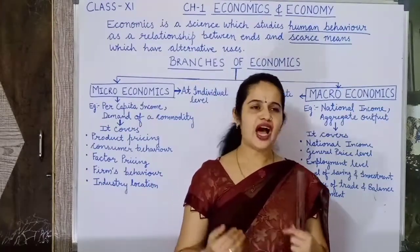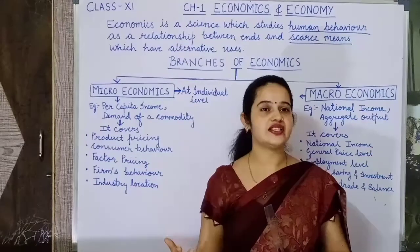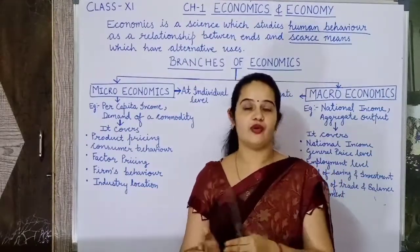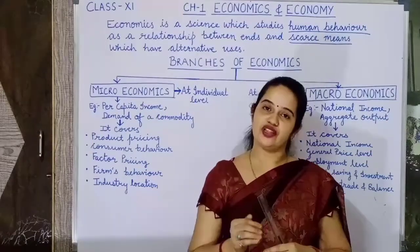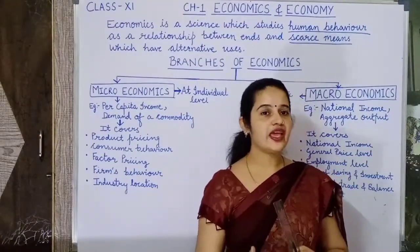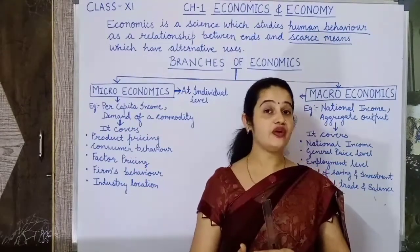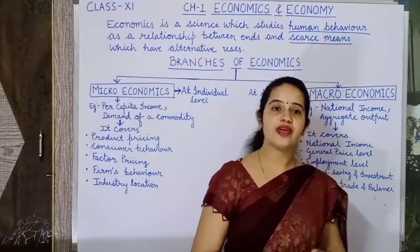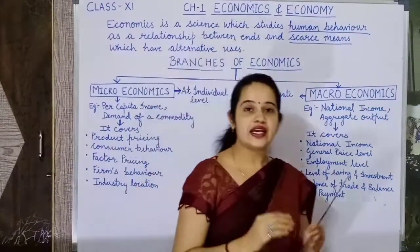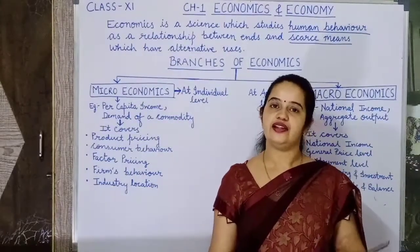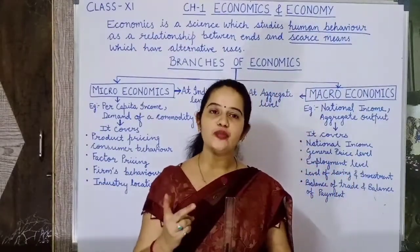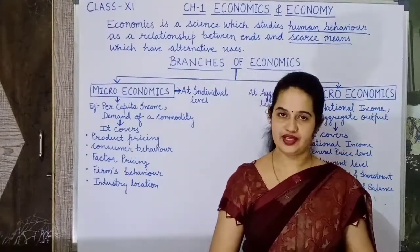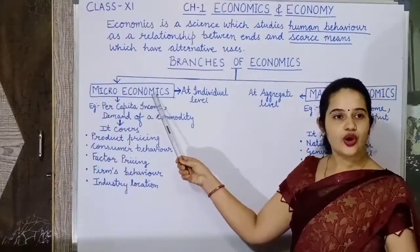And if you have to choose from alternative uses, it creates an economic problem or a problem of choice. This implies that economics is a very vast concept, and therefore it is divided into two main branches: microeconomics and macroeconomics. So first we start with microeconomics.